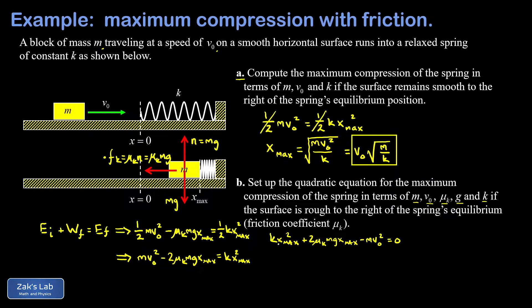Now we apply the quadratic formula to this thing. So I have x max is negative b. That's the coefficient of the linear terms negative 2 μk m g plus or minus the square root of b squared. So I'm going to square the coefficient of that linear term that gives me 4 μk squared m squared g squared minus 4AC. So minus 4. And then a is the coefficient of the quadratic term. That's k. And then the constant term is actually a negative making this term positive. And that's m v0 squared. So there's my negative 4AC. Now this is all divided by twice the coefficient of the quadratic term.